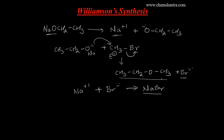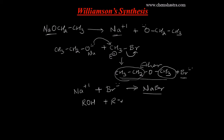The major product in this reaction is an ether molecule. This is a mixed ether — methyl on one side and ethyl on the other. Whether you get a mixed ether or a simple ether depends on the alkyl groups selected. If ROH and RBr have the same alkyl group, you get a simple ether. If the alkyl groups differ, you get a mixed ether.